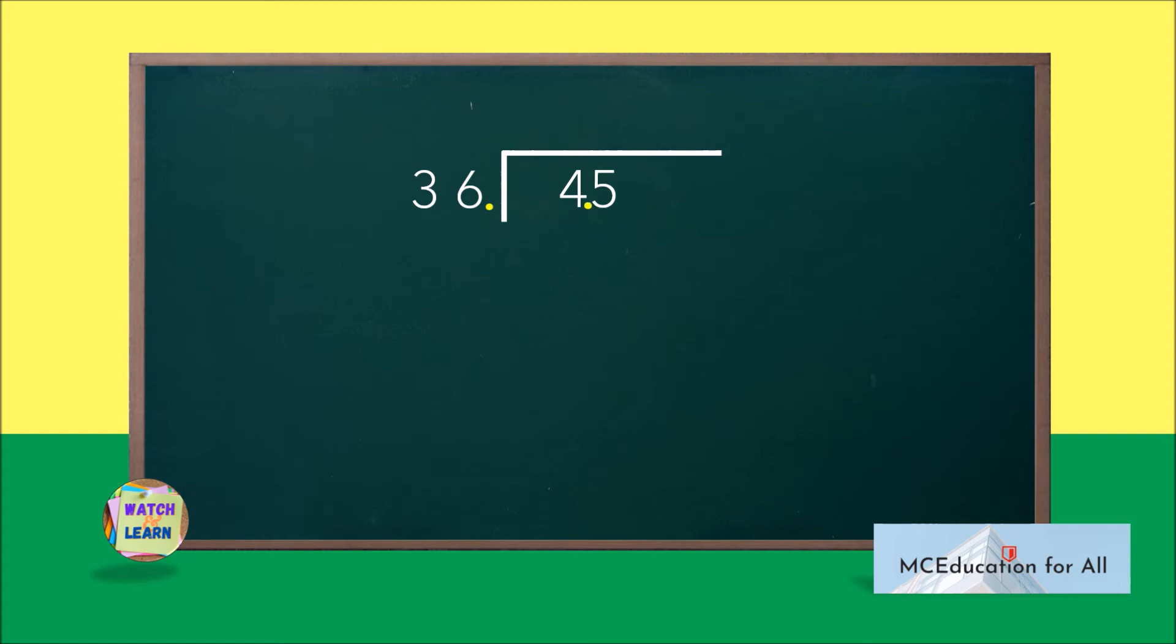Divide normally until you get zero as a remainder. 4 divided by 36 is not possible, so let's write zero and take 45 instead. 45 divided by 36 is 1. 1 times 36 is 36. 45 minus 36 is 9.